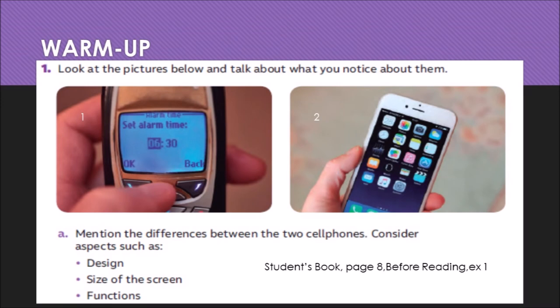Next activity. This is a warm-up. Es una especie de motivación para la clase de hoy. Look at the pictures below and talk about what you notice about them. Mira estos dos modelos de celulares y a ver qué notamos acerca de ellos. Mention the differences between the two cell phones: design — ¿qué notas respecto al diseño? Size of the screen — ¿qué notas acerca del tamaño de la pantalla? And what do you notice about the functions? ¿Qué notas respecto a las funciones que ellos tienen?